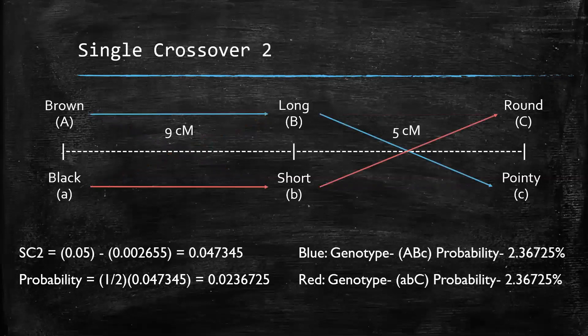Next, we have our single crossover 2 events. There are two possible gametypes because there are two possible single crossover 2 events. Following the blue arrows, we can see our first gametype is big A, big B, little C. Following the red arrows, we can see our second gametype is little A, little B, big C.